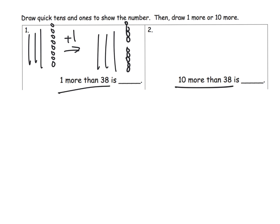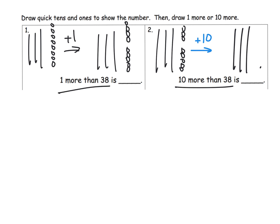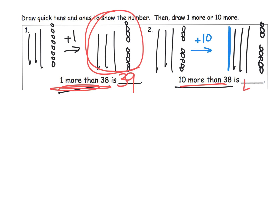Now if we wanted to show ten more than thirty-eight, we would start off with thirty-eight again — there's my thirty, one, two, three, four, five, six, seven, eight, there's my thirty-eight. Then ten more would simply be adding one more rod, or quick ten. So: one more than thirty-eight is thirty-nine, because our picture says so. Ten more than thirty-eight is forty-eight, because my picture right here says so.